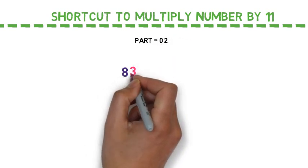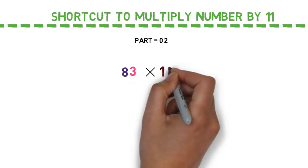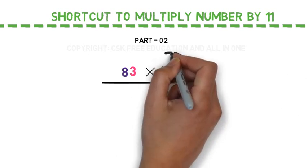Let us consider number 83, and let's say if I am supposed to multiply this by 11. This is also very simple as the previous one.